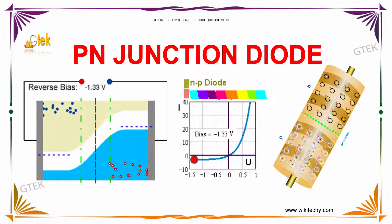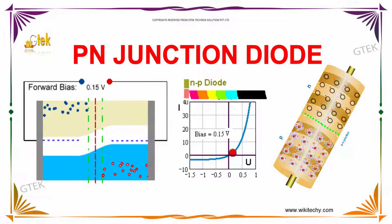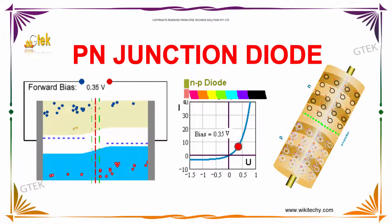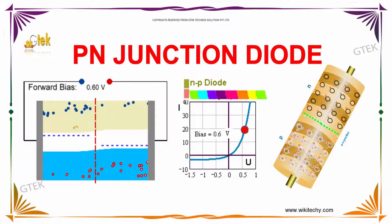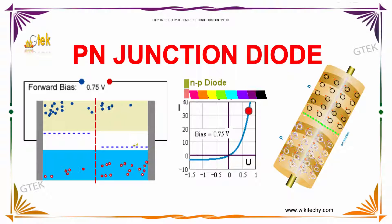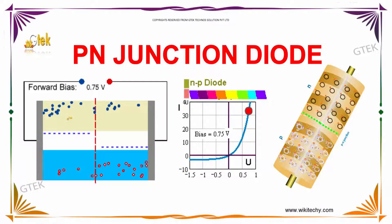This is going to be a real interesting area. That's your PN junction diode. Once we have seen in our last videos about the P type and the N type, this is different because we are going to merge your P with N. We got our PN junction diode.